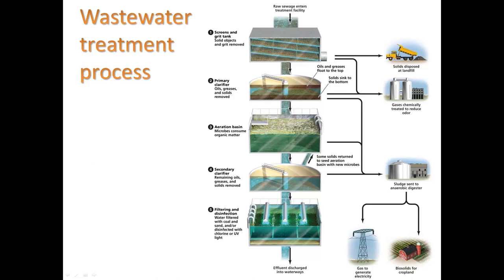There's another step called the preliminary treatment step, which is the very first step where water runs through screens and a grit tank. This removes solid objects and grit — things like eggshells, coffee grinds, or even money that gets flushed or falls down a drain. After preliminary treatment comes primary treatment, where things settle out or float to the top and are collected. Then it goes into the secondary treatment, which is your aeration basin.